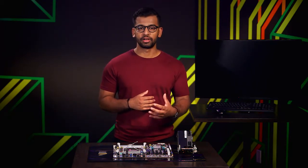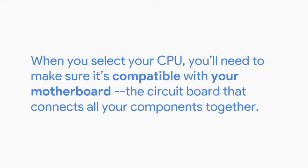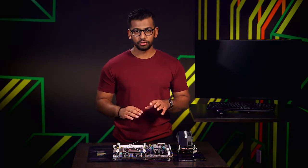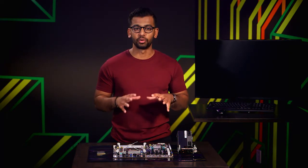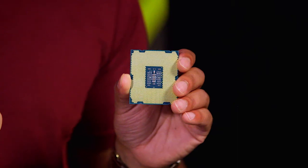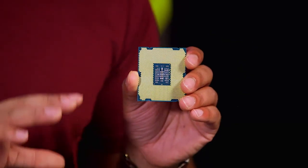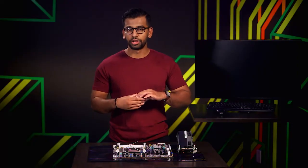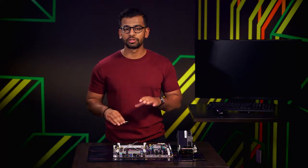Each of these CPU manufacturers have their strengths and weaknesses. If you're interested in learning more about why some CPUs are more popular than others, you can check out the next supplemental reading. When you select your CPU, you'll need to make sure it's compatible with your motherboard — the circuit board that connects all your components together. Heads up: you can't just buy a bunch of parts and expect them to work together. There are different ways CPUs fit on motherboards using different sockets. Your CPU might have lots of tiny pins that either stick out or have contact points that look like dots.